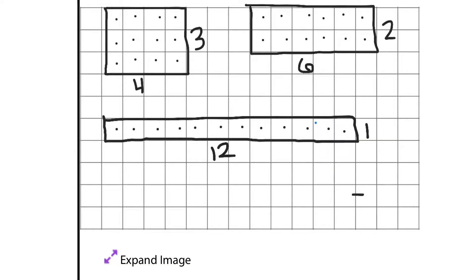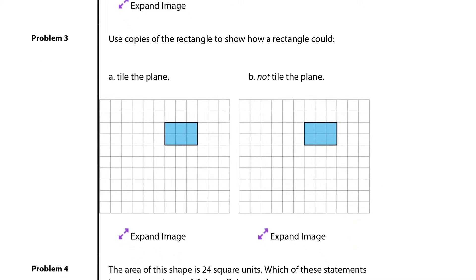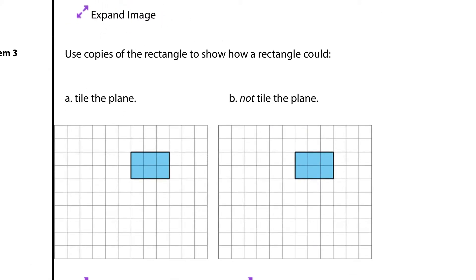So, we have a 3 by 4, a 2 by 6, and a 1 by 2 rectangle for the quadrilaterals. And as we move to question 3, use copies of the rectangle to show how a rectangle could A, tile the plane, and B, not tile the plane.